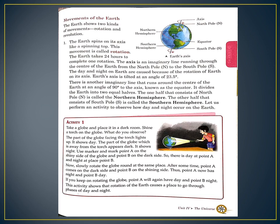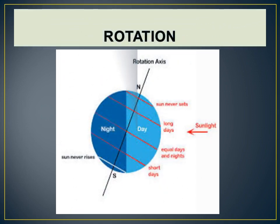The earth spins on its axis like a spinning top, and this movement is called rotation. You can see the axis in the picture. The earth takes 24 hours to complete one rotation. The axis is an imaginary line running through the center of the earth from the north pole to the south pole. Day and night on earth are caused because of the rotation of the earth on its axis.